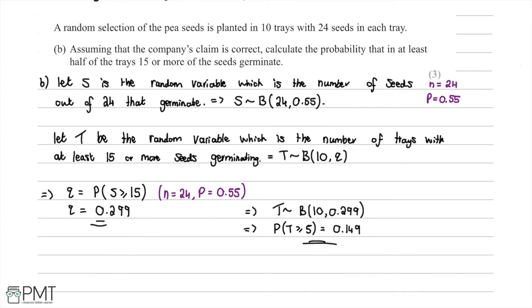This question was worth three marks. We receive the first mark for setting up both random variables — particularly knowing that Q is the probability to be worked out using random variable S. We receive the second mark for correctly calculating Q, and the third mark for the correct final answer of 0.149.